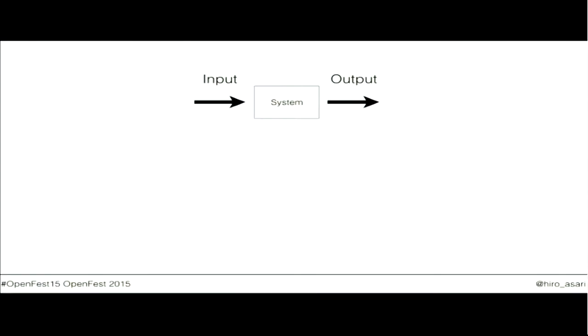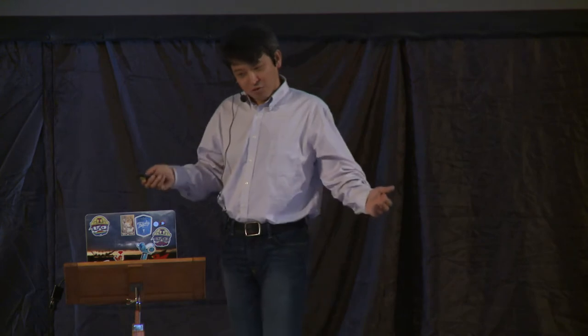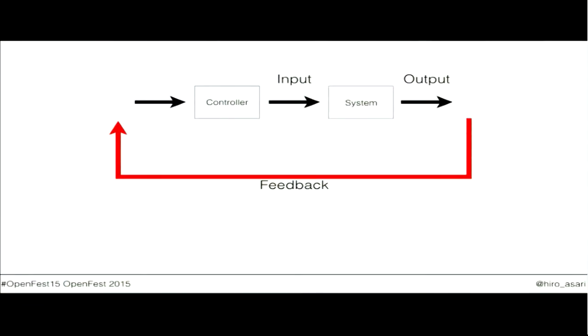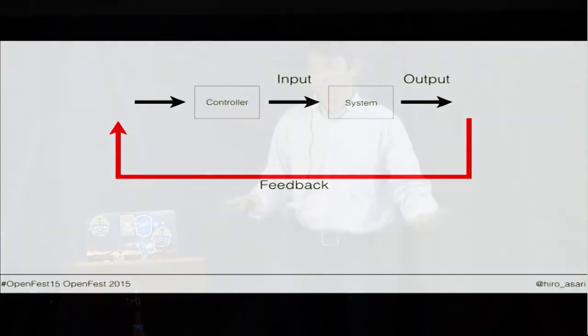What is control theory? It is a subfield of engineering that tries to address this problem. In this worldview, there is a system we want to control — it takes some sort of input and emits some sort of output. If you want to control anything, you control the input. One effective approach is to take the output into consideration: the output informs the controller whether to increase or decrease the input.